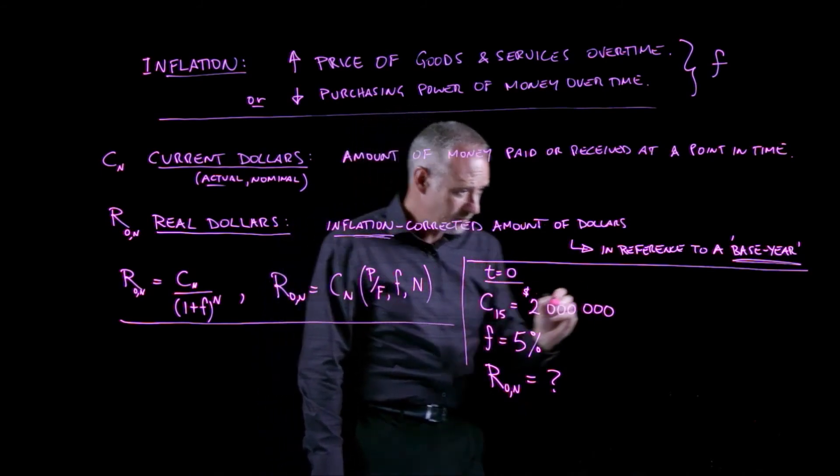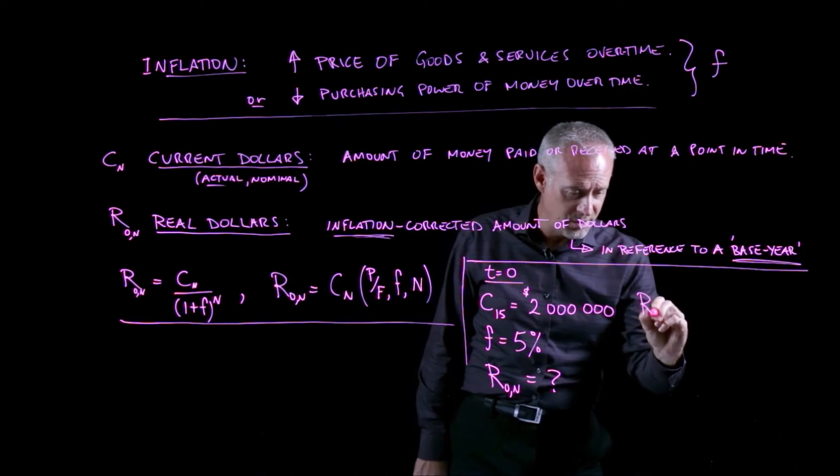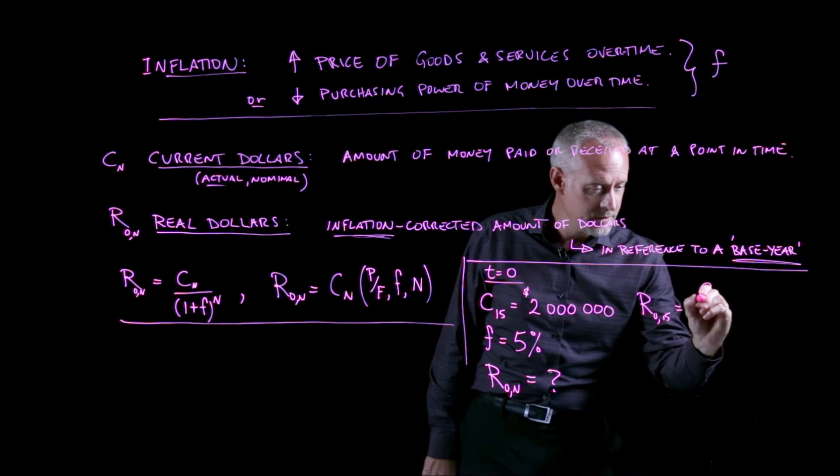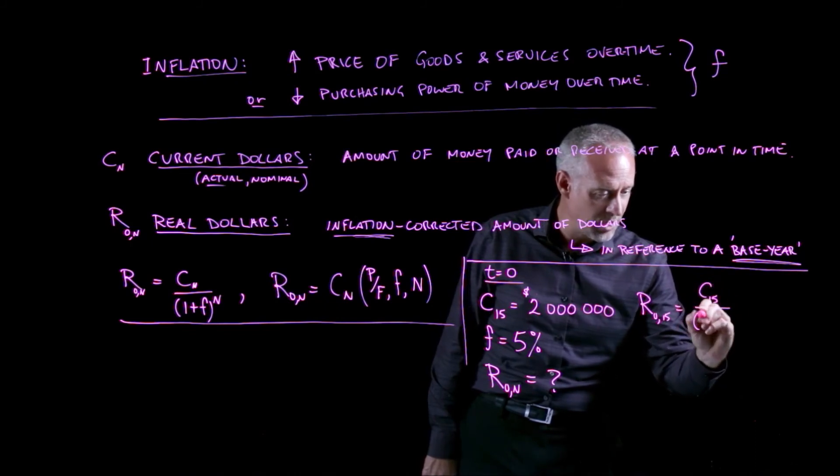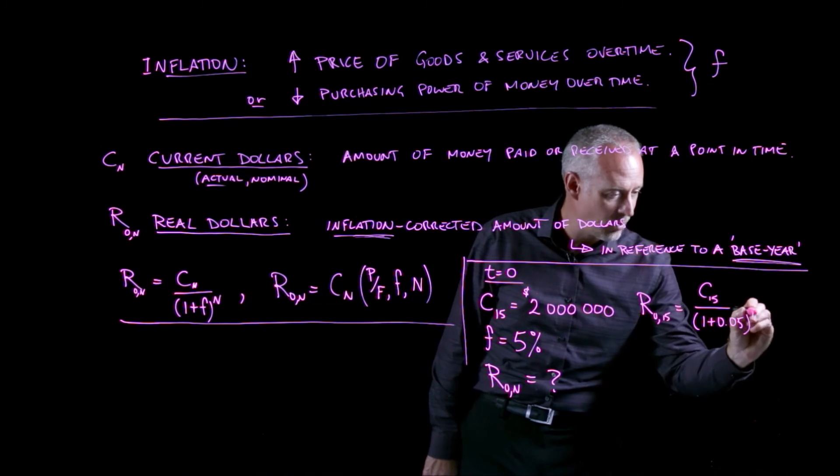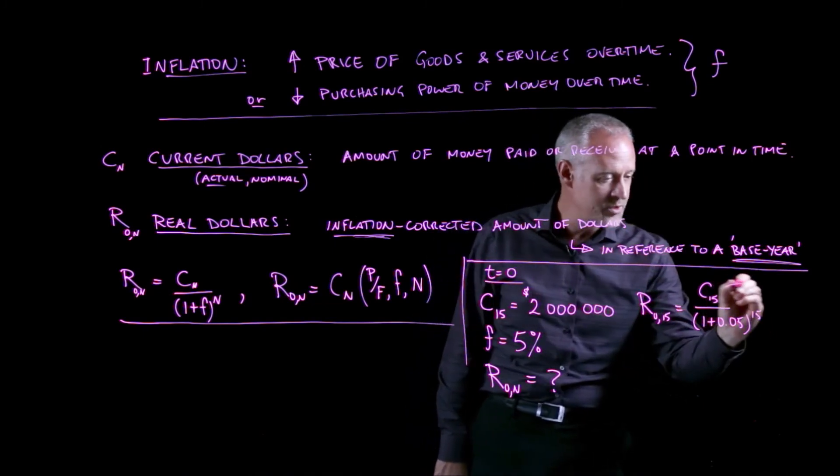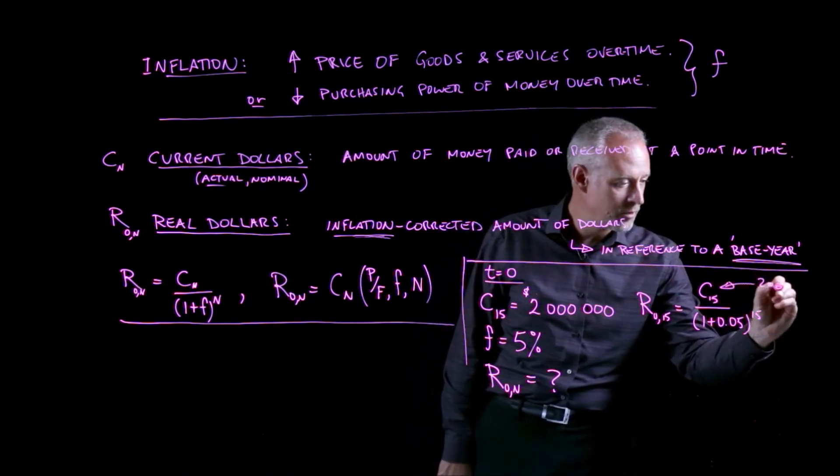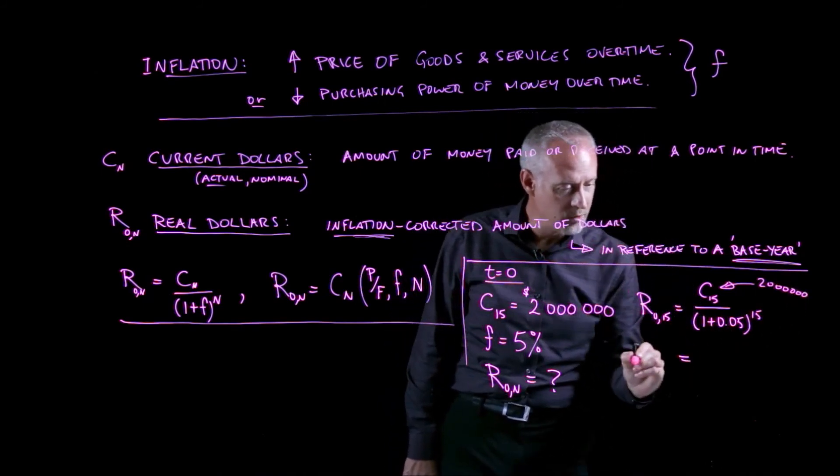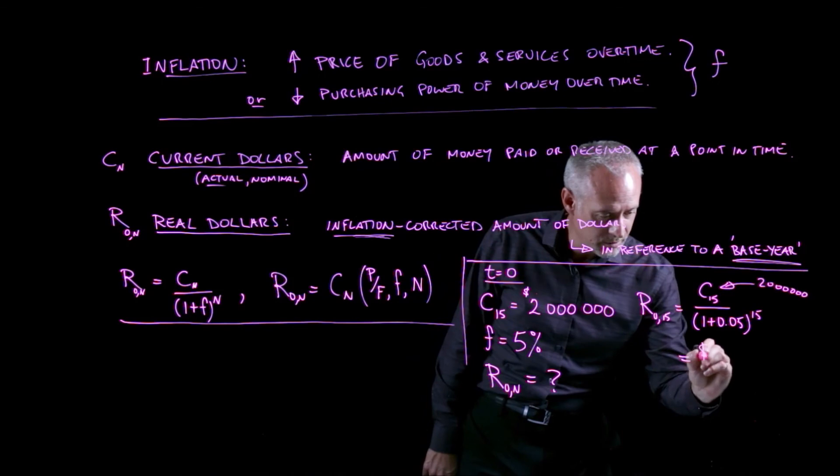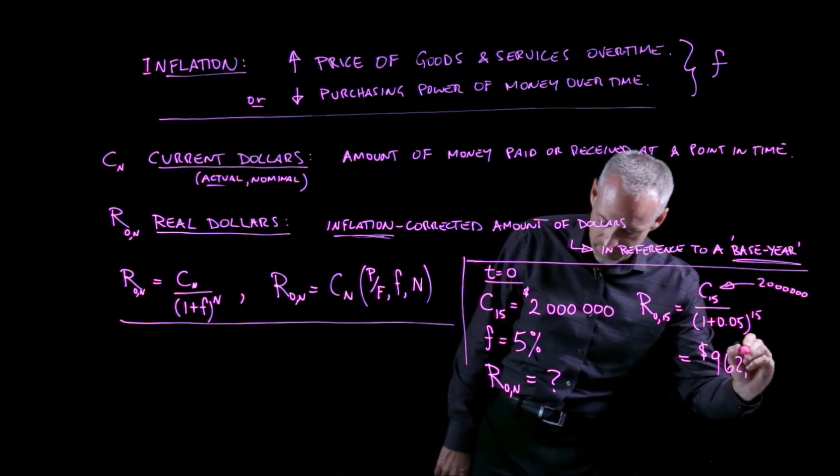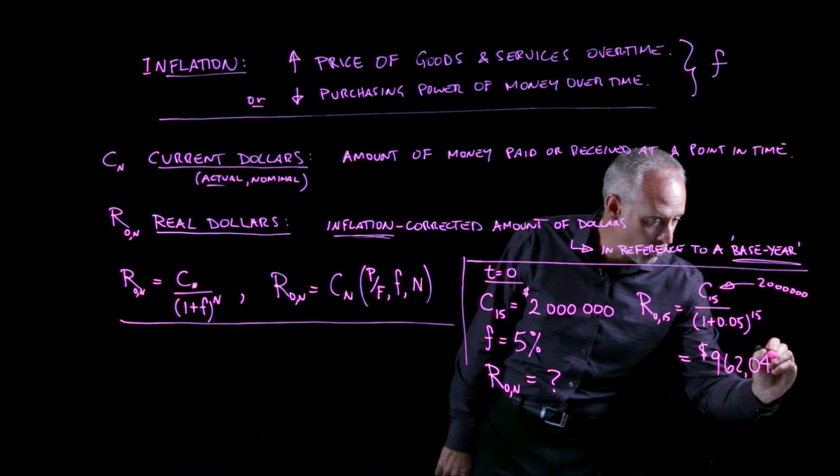And it becomes quite simple. We just plug in the formula where we take our C15 divided by 1 plus the inflation rate to the power of 15. And we'll sub our 2 million dollars in here. And if we work out what that is, we end up with 962,040 dollars.